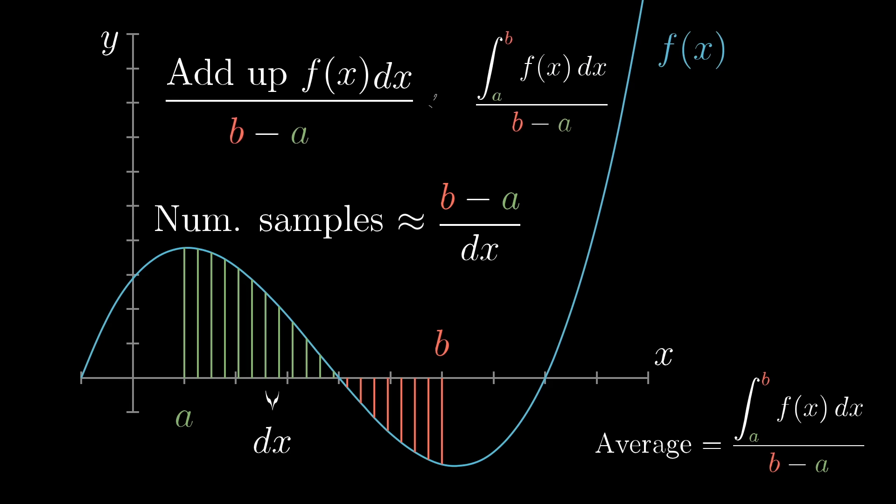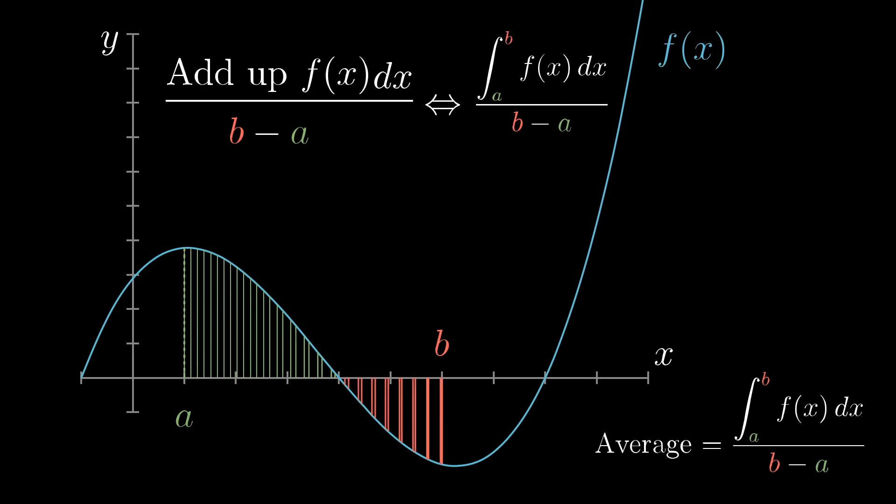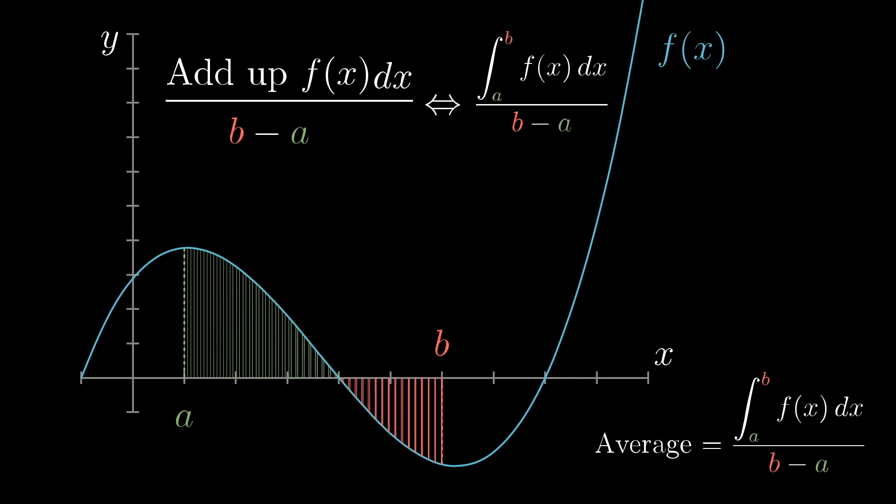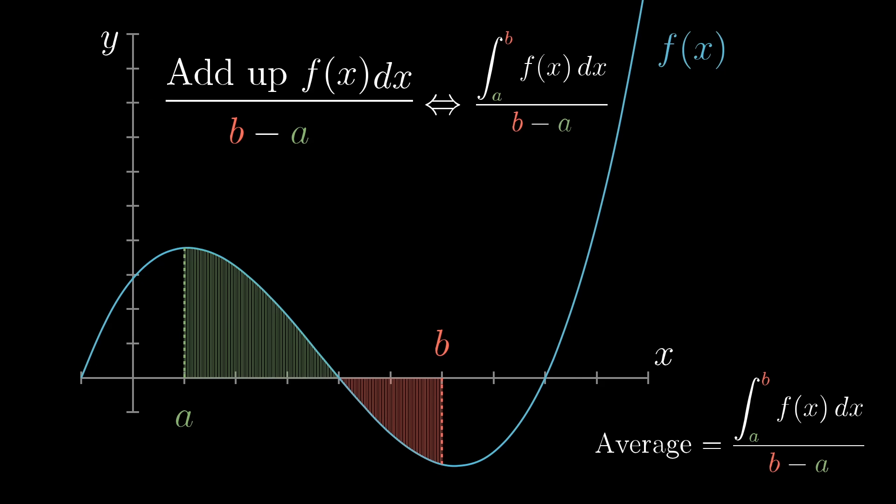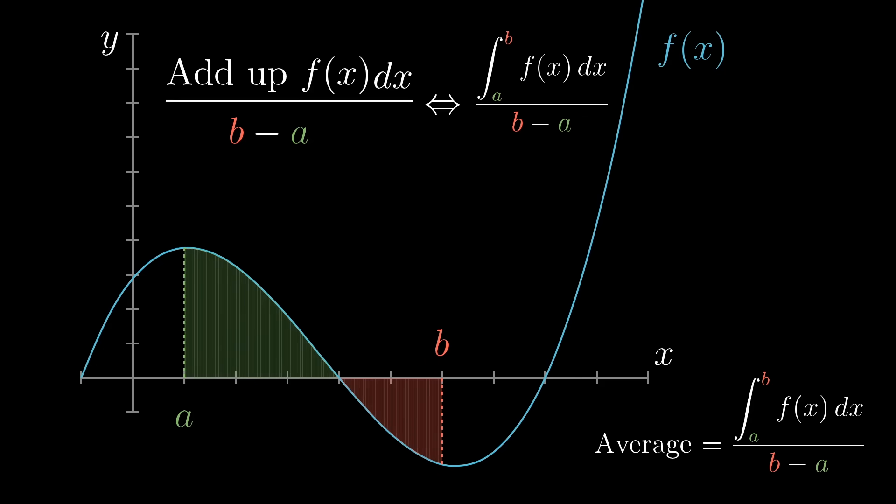The only difference between that and the integral is that the integral asks what happens as dx approaches zero, but that just corresponds with samples of more and more points that approximate the true average increasingly well.